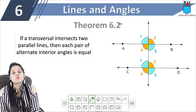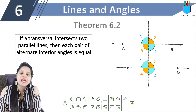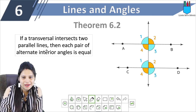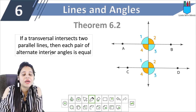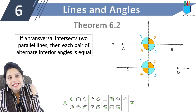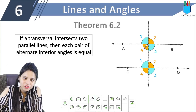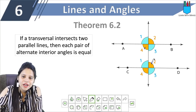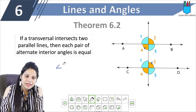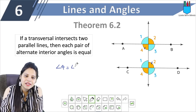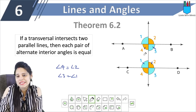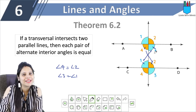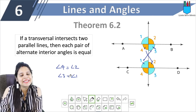Theorem 6.2: if a transversal intersects two parallel lines, then each pair of alternate interior angles is equal. Here, angle 4 and angle 2 are alternate interior angles, so angle 4 is equal to angle 2. Also, angle 3 is equal to angle 1. So alternate interior angles are equal when lines are parallel.